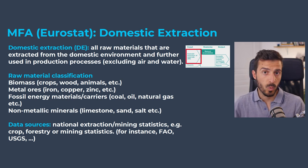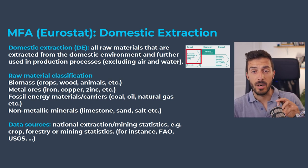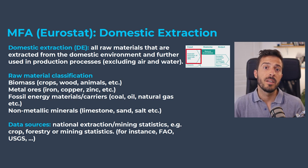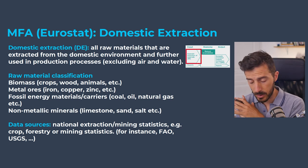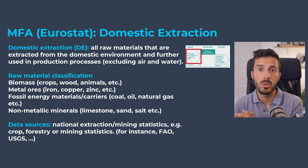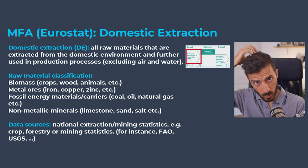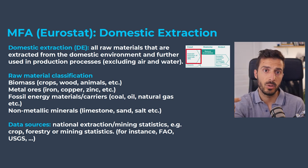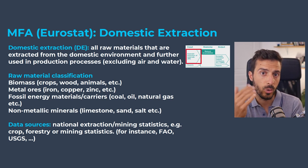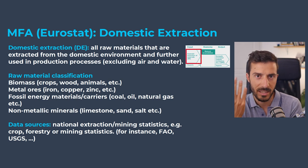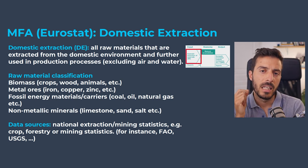For domestic extraction, we account for all raw materials extracted from the domestic environment and further used in production. We don't include air and water, but we do include biomass, fossil fuels, crops, wood, animals, metals — iron, copper, zinc — fossil energy materials like coal, oil, and natural gas, and non-metallic minerals like clay, limestone, sand, and salt.